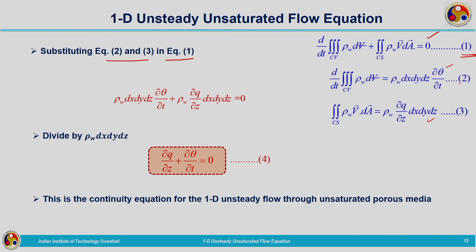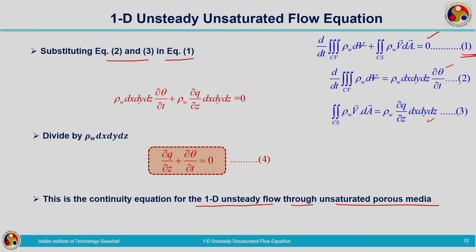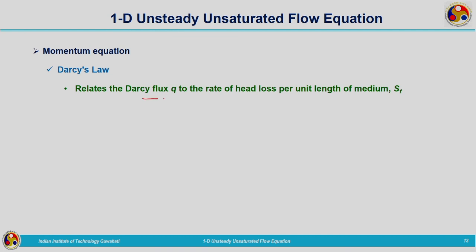We have considered a control volume with the volumetric Darcy's flux small q for inflow, and related outflow based on the Reynolds Transport Theorem. Considering our extensive and intensive properties, and substituting into the Reynolds Transport Theorem, we derived our continuity equation for one-dimensional unsteady unsaturated flow. Now we are going to derive the momentum equation based on Darcy's law: it relates the Darcy's flux q to the rate of head loss per unit length of the medium, Sf.